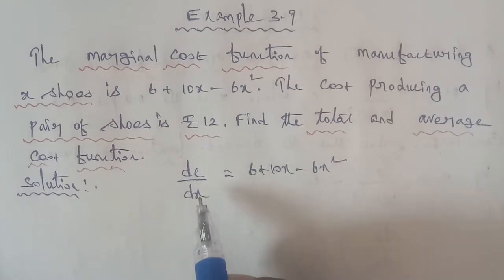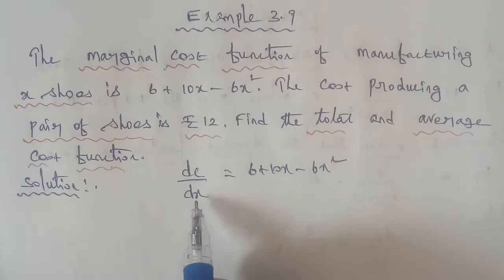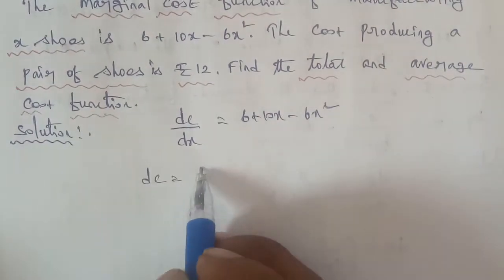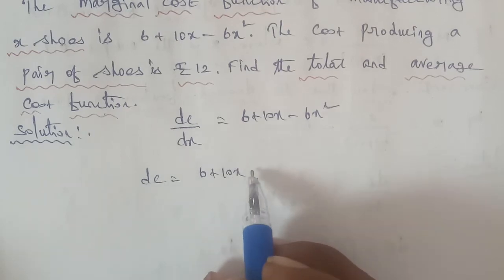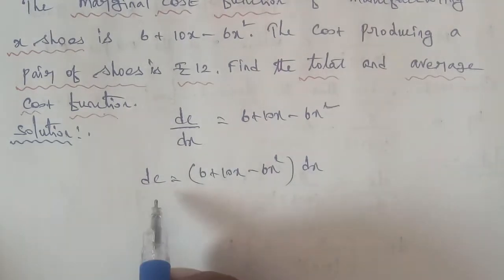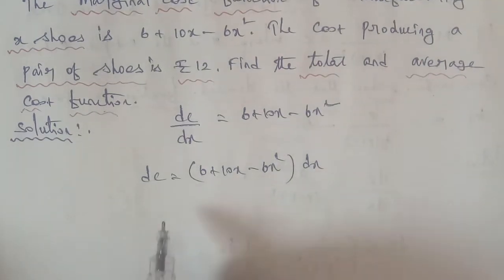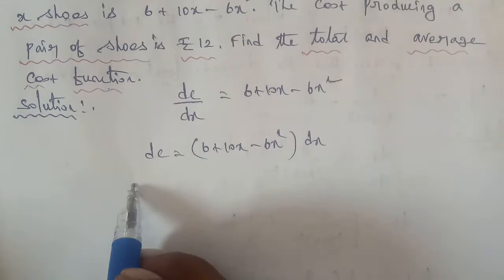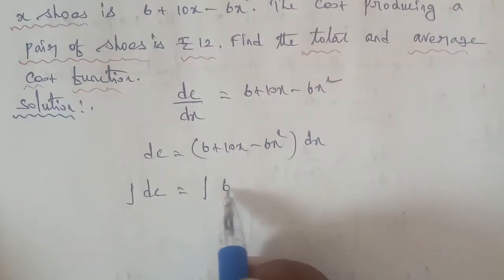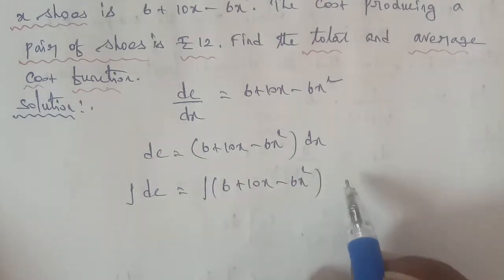Next, separating variables. The DX term is separated from the X term. DC is equal to 6 plus 10X minus 6X square, into DX. So separating variables applied, integrating both sides: integration of DC on one side, and integration of 6 plus 10X minus 6X square DX on the other side.